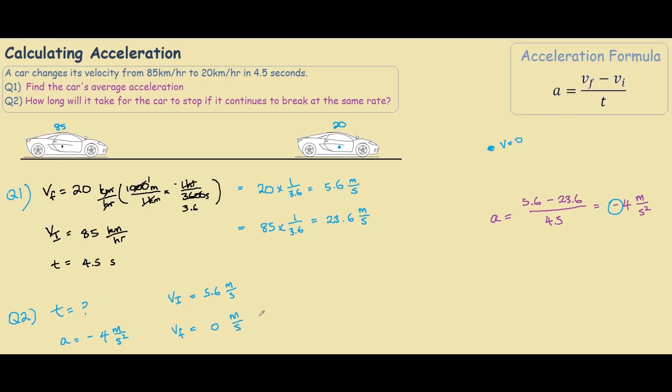So if we look back at our formula, we have a, we have v final, and we have v initial. So all we need to do now is find t. So if we rearrange the formula, we will have t equals vf minus v initial over a.